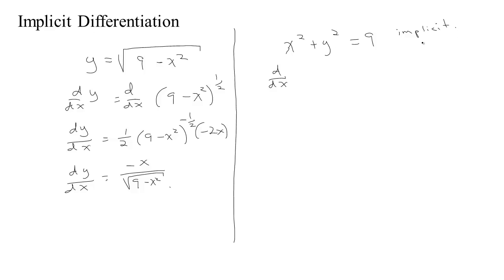This word literally means 'folded in,' so information about how y depends on x is folded into this equation — whereas in the previous case it was folded out. That was explicit: it was clearly shown how y depends on x. So this is an implicit function.